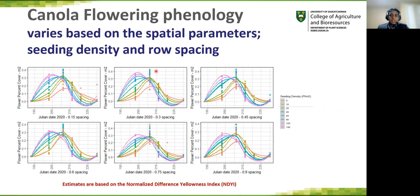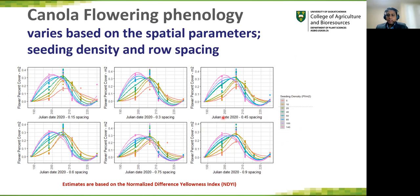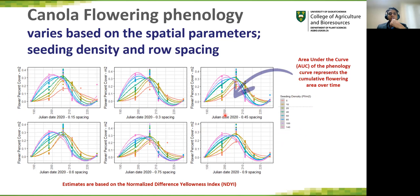We also looked at canola flowering phenology. Canola flowering phenology associations with yield is a well-characterized research domain, and we observed very similar results from our study. Our study highlights phenological variations based on different row spacings and different seeding densities. When spacing is high, the number of flowers is going to be low, and higher densities tend to flower early compared to lower densities. The area under the curve of the phenology curve represents the cumulative flowering area over time, which we found highly correlated with yield.